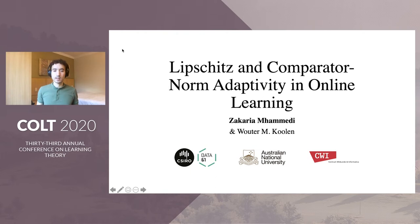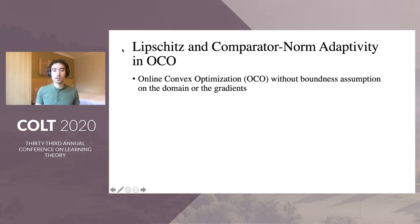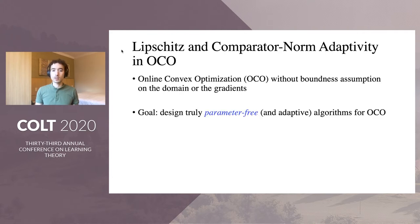Hi, I'm Zach, and this is joint work with Walter Cullen. In this paper, we consider the online convex optimization setting where we make no boundedness assumption on the domain or on the norm of the gradients. Our goal is to design completely parameter-free algorithms, which require no tuning and still achieve optimal regret bounds in online convex optimization.